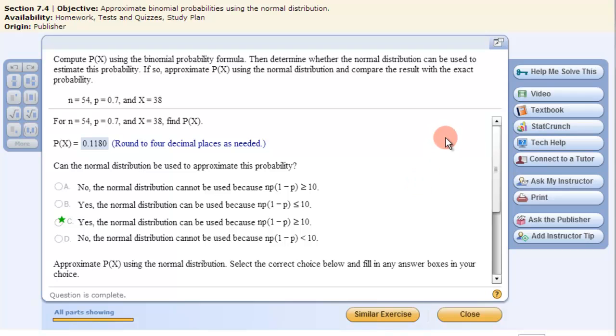In this video we're going to review using the normal calculator in StatCrunch and then the binomial calculator in StatCrunch, which we've done, but this will just be a review. The first question wants you to calculate P of X, the probability of X number of successes from the binomial distribution.